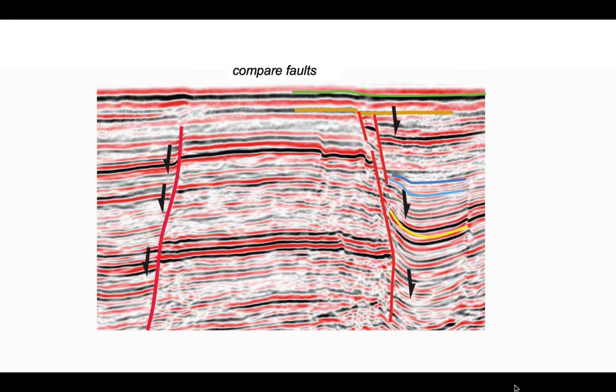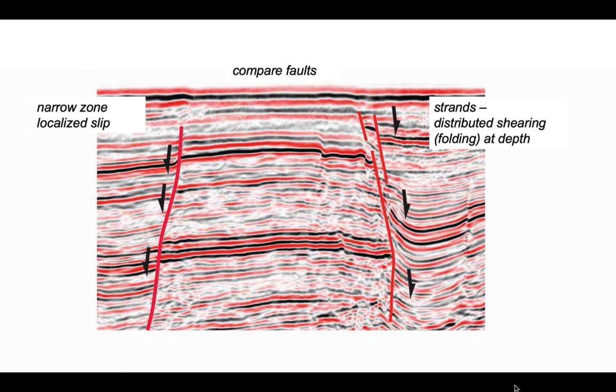So we can compare our two faults. The fault on the left we can consider to be a narrow zone within which the slip is localized, more or less the thickness of the red stripe that we put on the diagram. The right hand structure is rather more complicated. It looks like there's distributed shearing as manifest by the folding at depth, and maybe the fault zone itself is represented by a series of discrete fault strands.